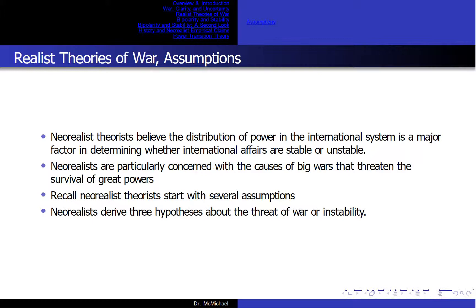Neorealist theories believe the distribution of power in the international system is a major factor in determining whether international affairs are stable or unstable. Instability refers to changes in the composition of the international system, especially when key states emerge or disappear following large wars. Key states, or essential actors, are those necessary to counteract a threat from a rival coalition of states.